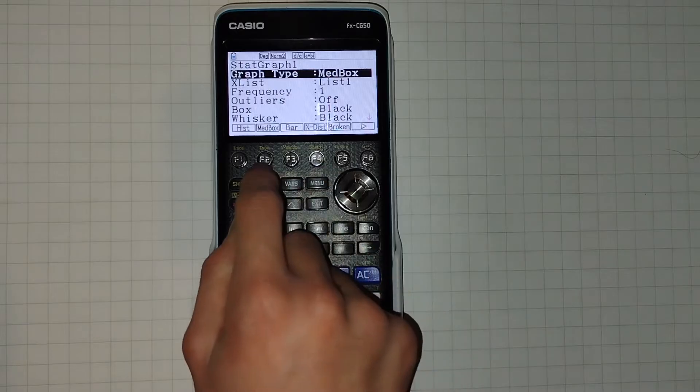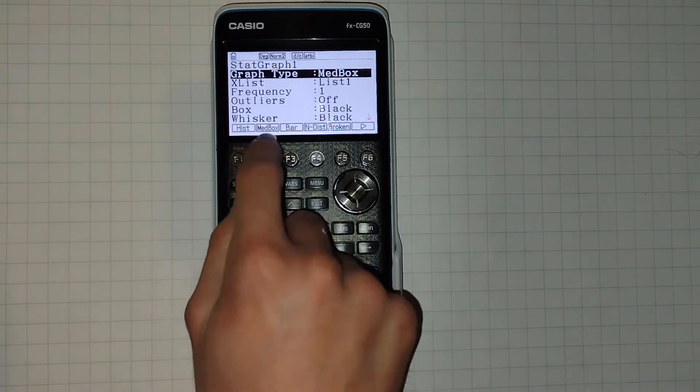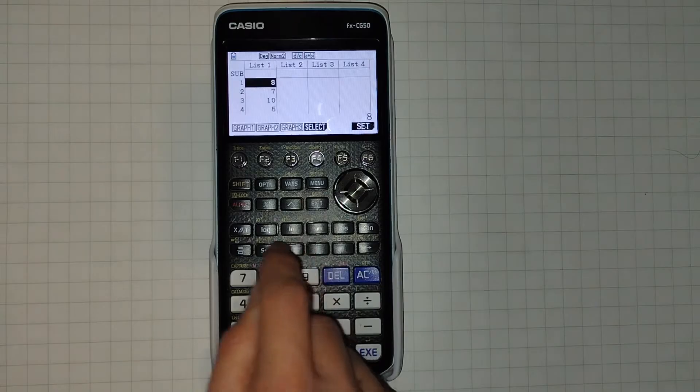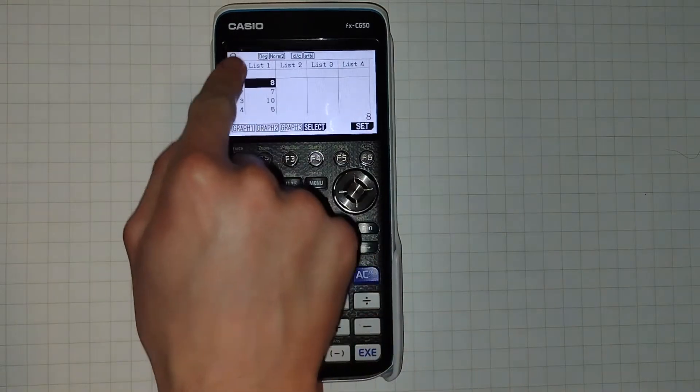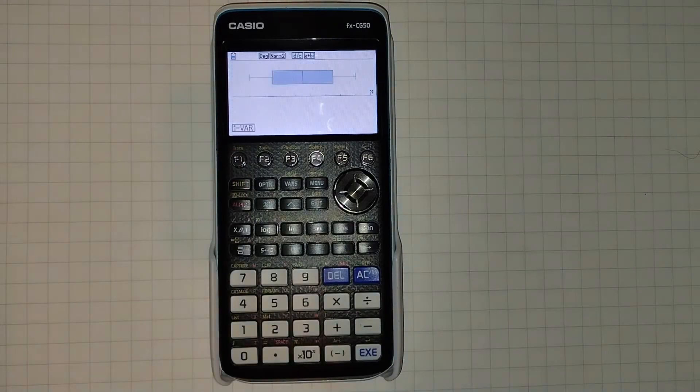In this case, I'm going to plot a box plot, also known as Medbox here. Clicking exit, we can then click F1, graph 1, to graph our first graph for list 1. And there you go.